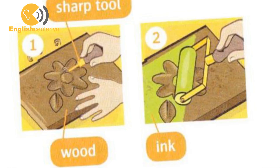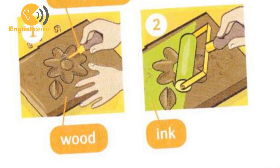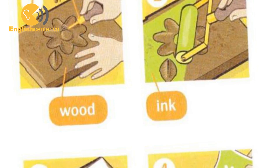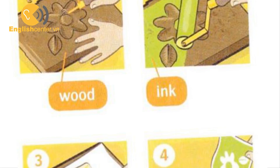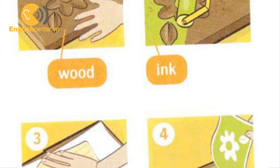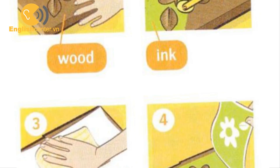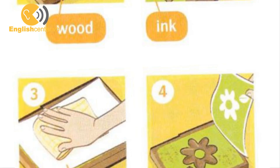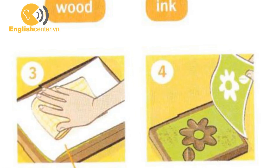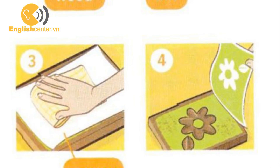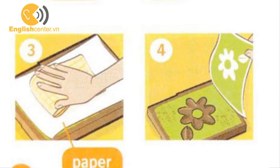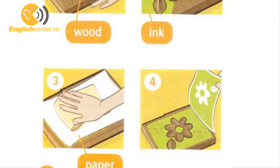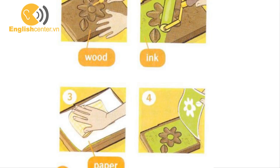This type of picture is called a woodblock print. To make a woodblock print, artists draw on flat pieces of wood. Then they cut the wood with a sharp tool to make the different parts of the picture. They put ink on the wood, then press a piece of paper on it. They use a different piece of wood for each color, but they press the same piece of paper on each piece of wood.